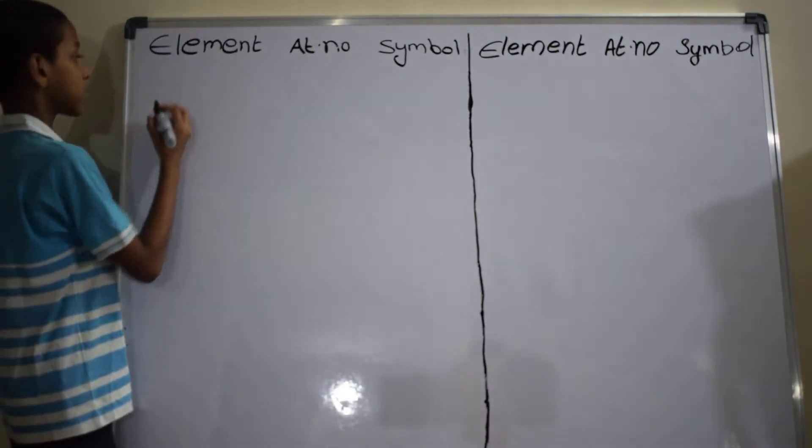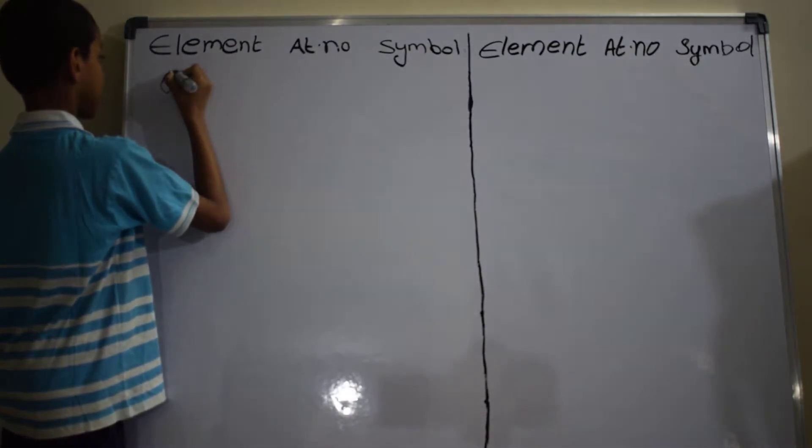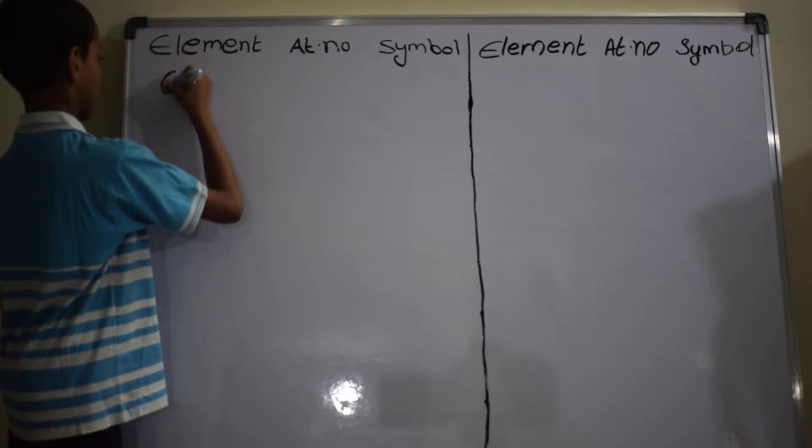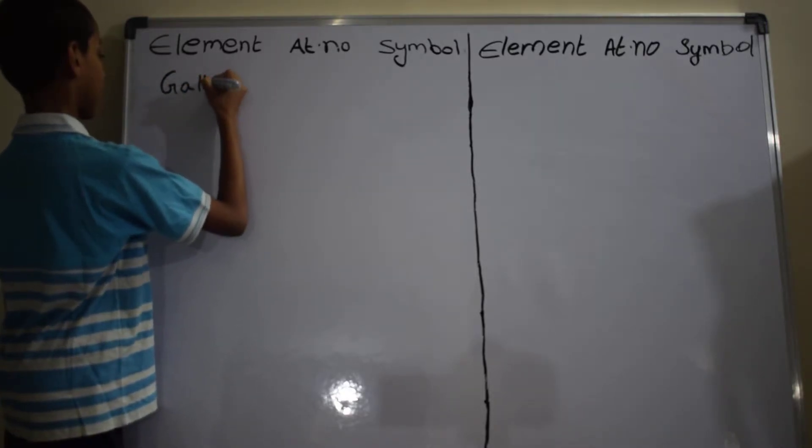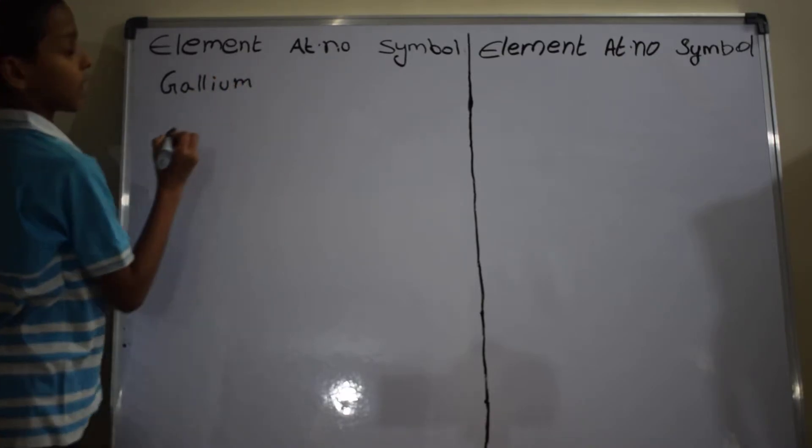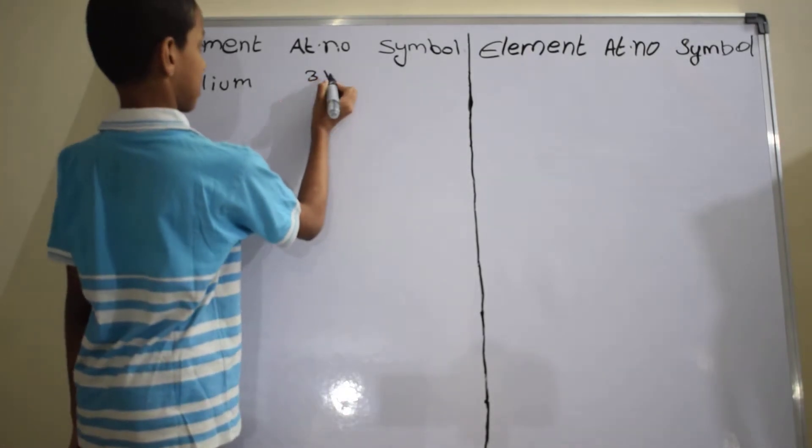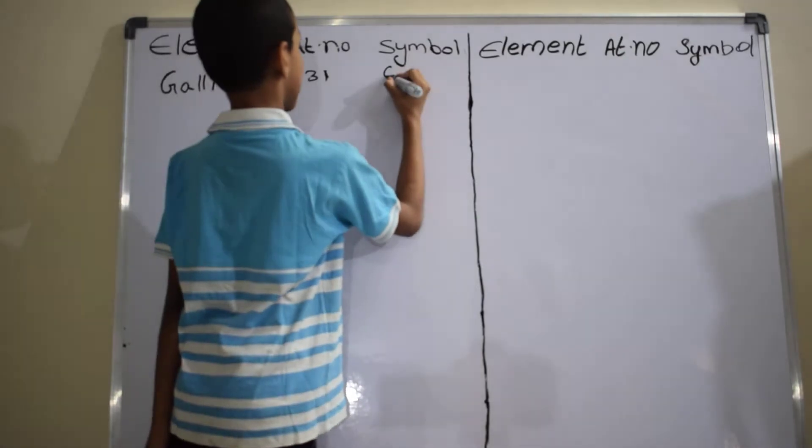Element 31 is gallium, G-A-L-L-I-U-M, and the atomic number is 31. The symbol is Ga.